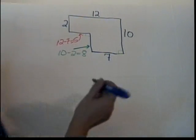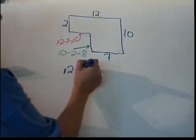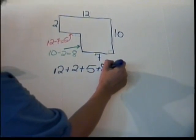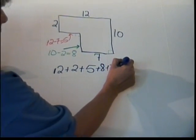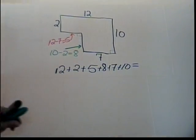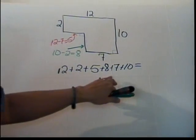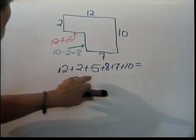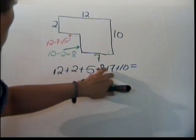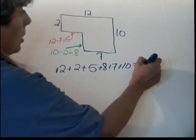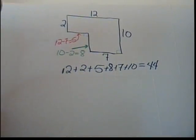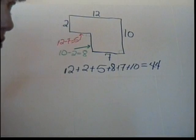Now we can add all the sides together to get the perimeter: 12 plus 2 plus 5 plus 8 plus 7 plus 10, which gives a total perimeter of 44. Note that we weren't asked for the area here — we were focused on identifying all the sides to find the perimeter.